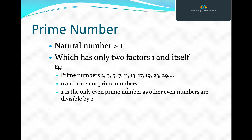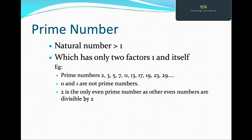0 and 1 are not prime numbers. 2 is the only even prime number, as any other even number is divisible by 2. For example, 10 is divisible by 2, 100 is divisible by 2, and 1000 is divisible by 2. So all other even numbers are divisible by 2, hence 2 is the only even prime number.